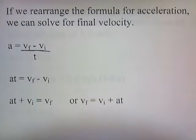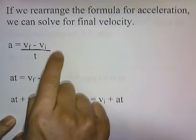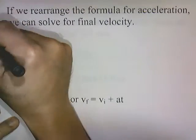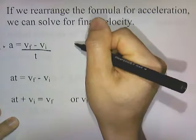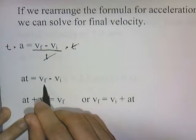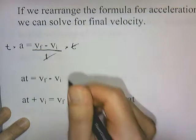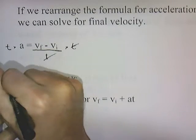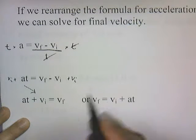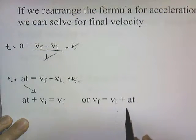If we rearrange the formula for acceleration, we can solve for final velocity. Acceleration is final velocity minus initial velocity divided by time. If we multiply both sides by time, acceleration times time gives us at, and the t cancels. So at equals vf minus vi. Then we add vi to both sides: at plus vi equals vf. The vi's cancel, and if you flip this around, you get vf equals vi plus at.